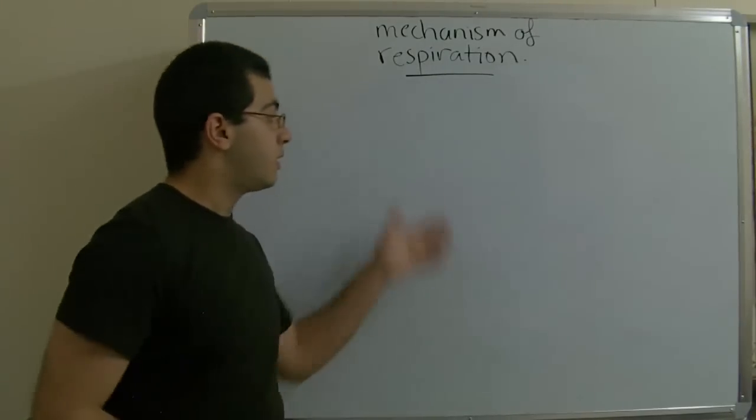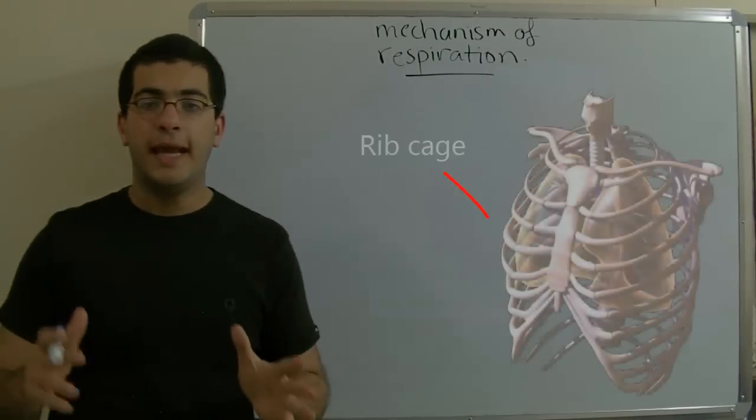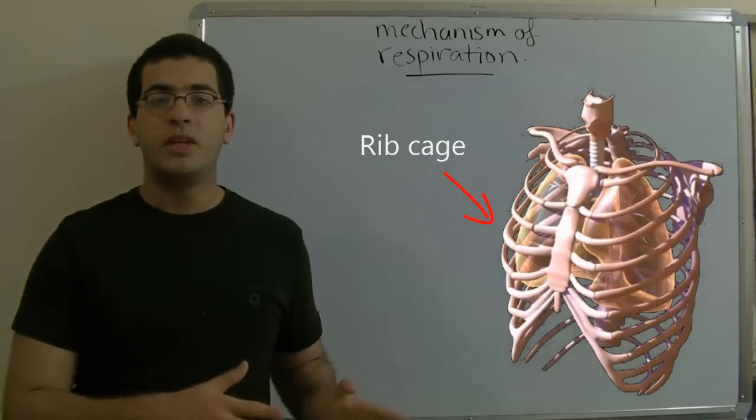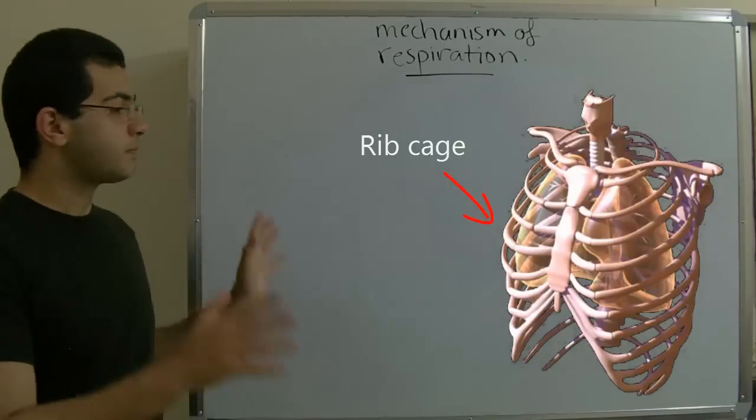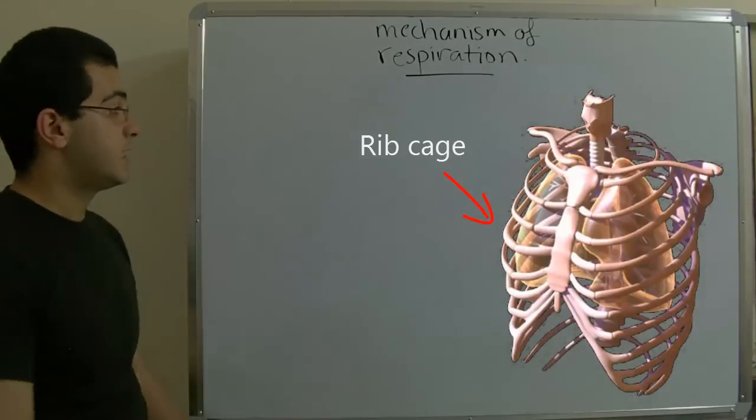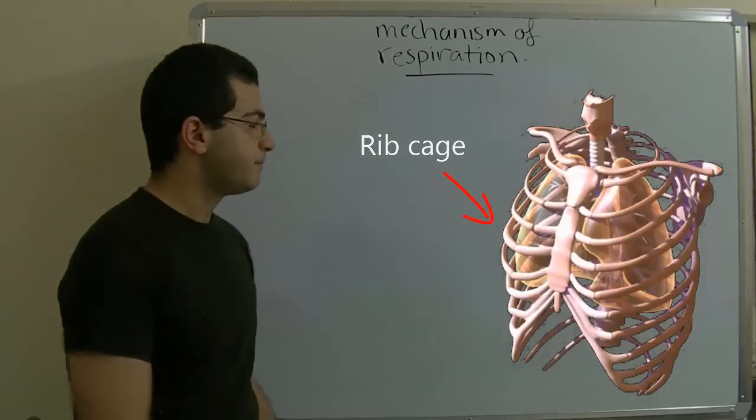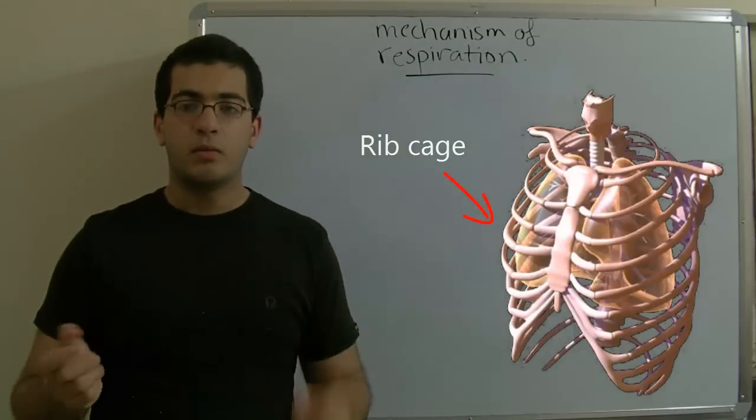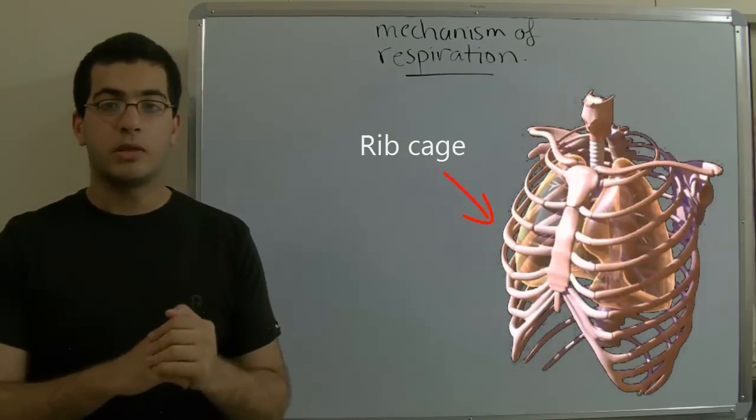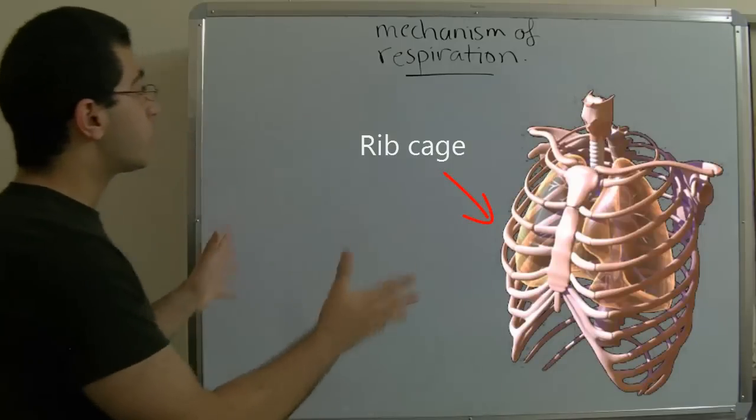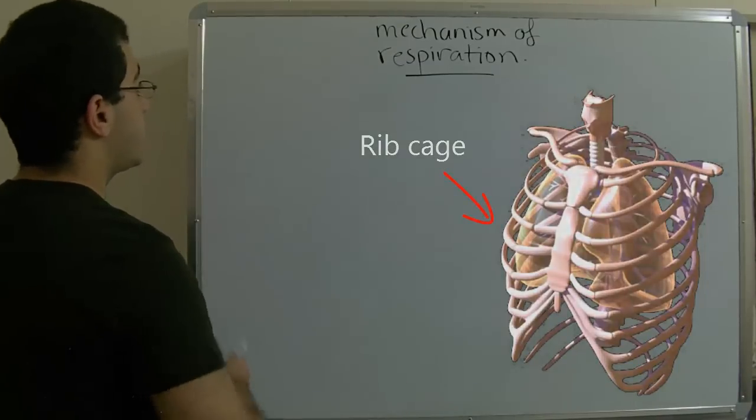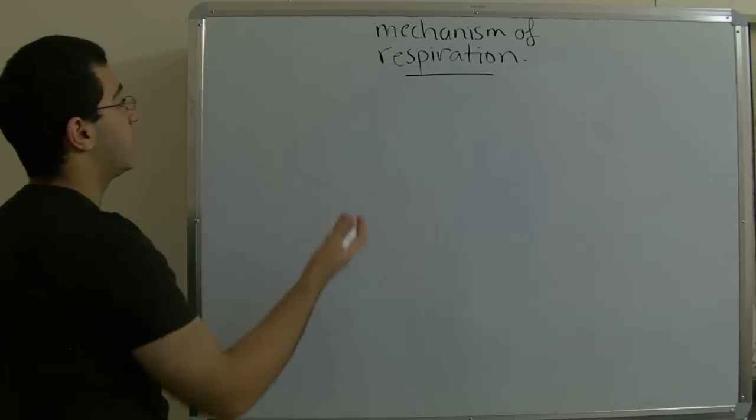First, the two lungs with the bronchi are found in a bone case which is called the rib cage. The rib cage consists of a group of ribs which enclose the respiratory system as we can see in this image. These ribs which are formed of bones are enclosed inside a group of muscles. These muscles control the movement of these ribs and accordingly they control the two processes which resemble the mechanism of respiration.